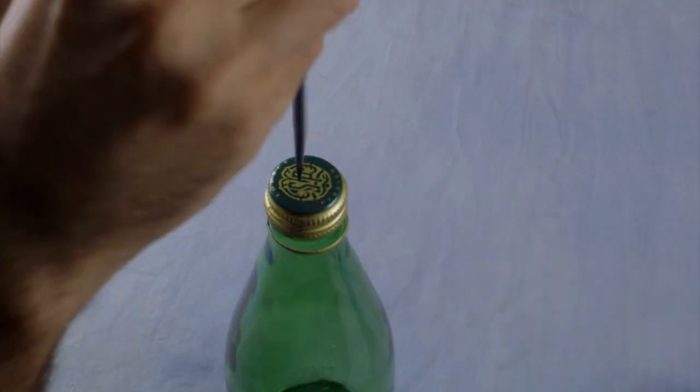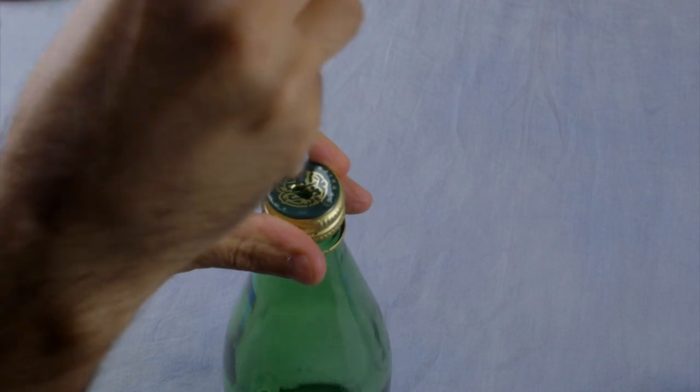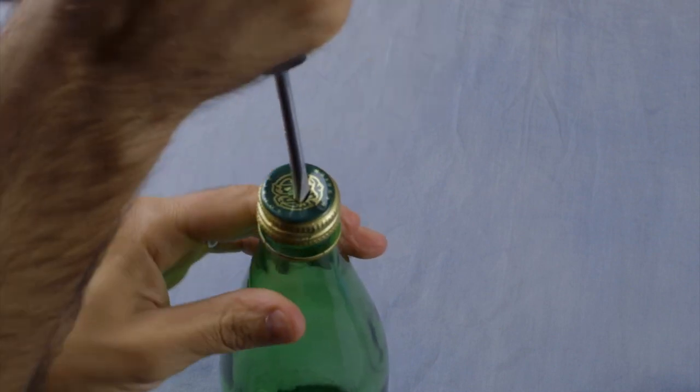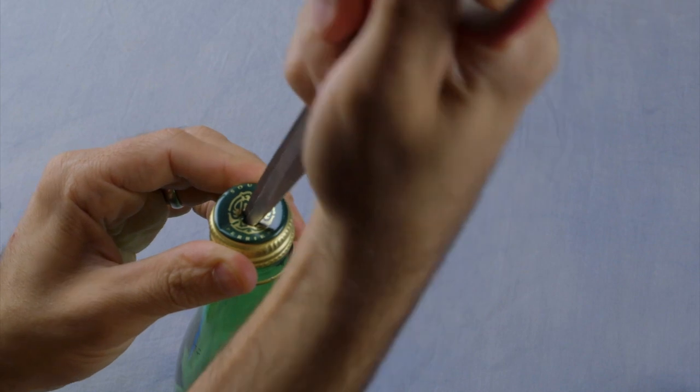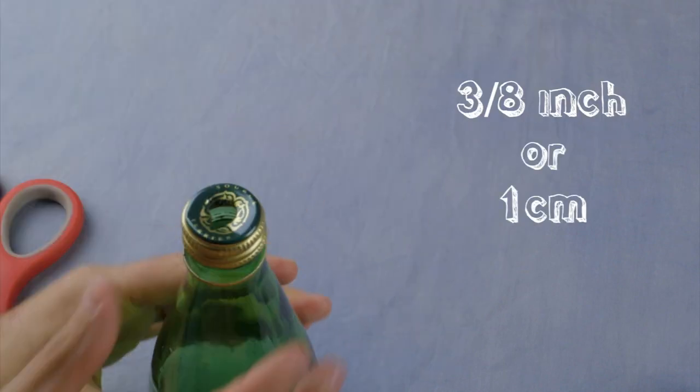Using a flat screwdriver poke a hole in the bottle cap like this. Use the wedge shape of the scissors to increase the size of the hole to about 3/8 of an inch or 1 centimeter in diameter.